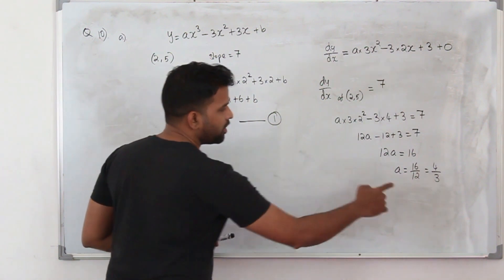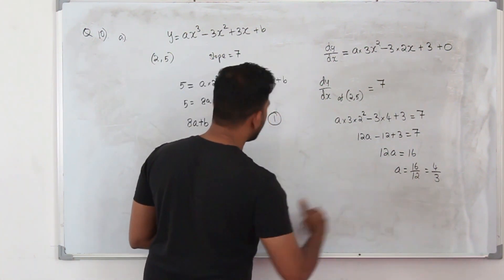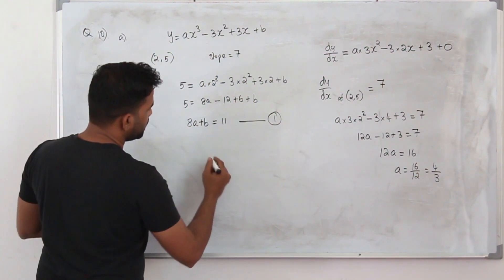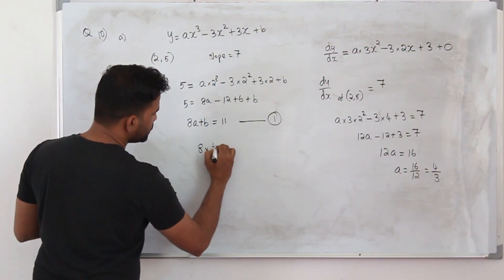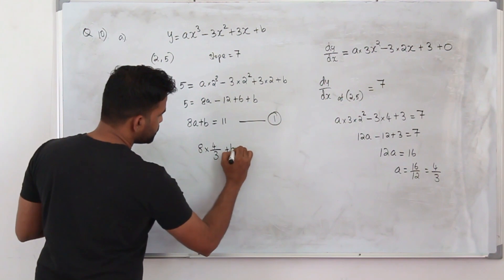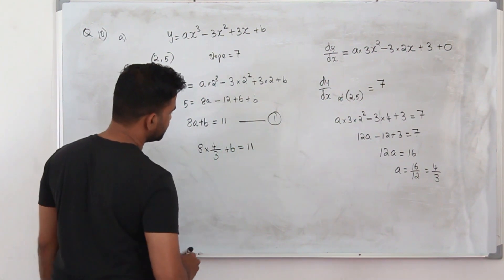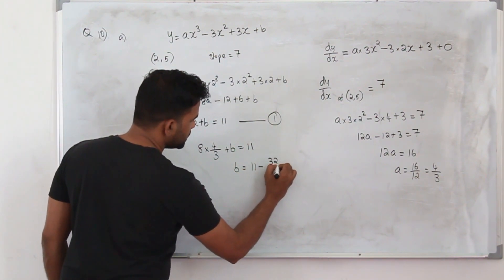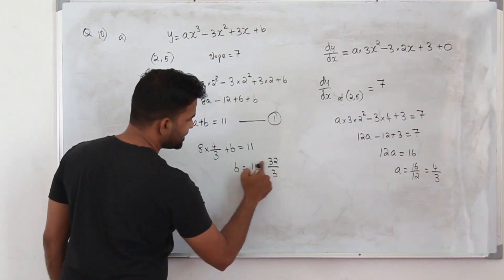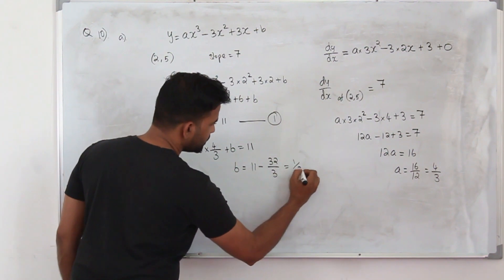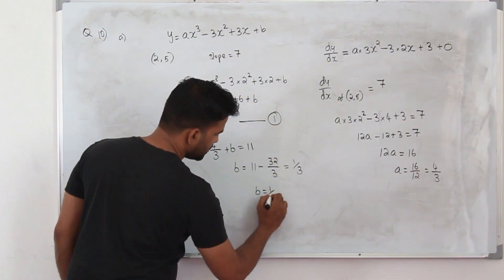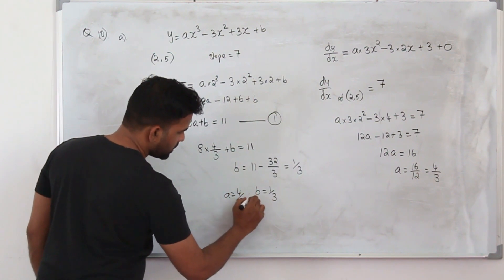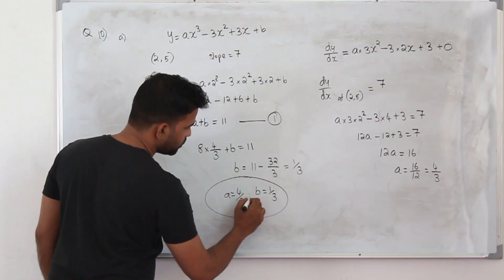Now we have the value of a, which is 4/3. Substitute a back into equation 1: 8 times 4/3 plus b equals 11, so b equals 11 minus 32/3, which is 33/3 minus 32/3, giving b equals 1/3. So a equals 4/3 and b equals 1/3.